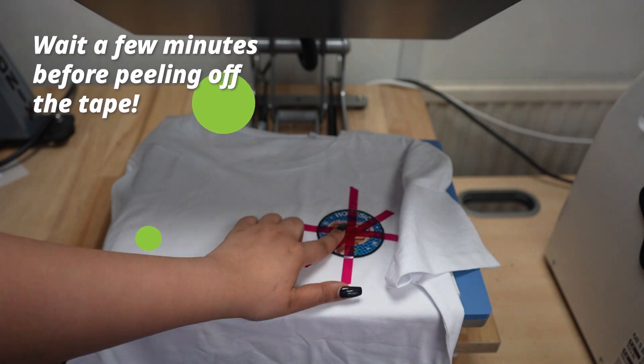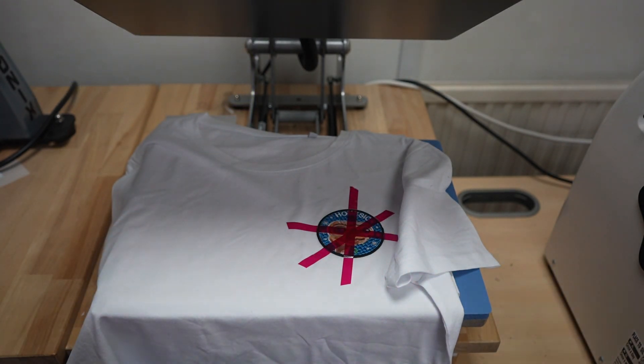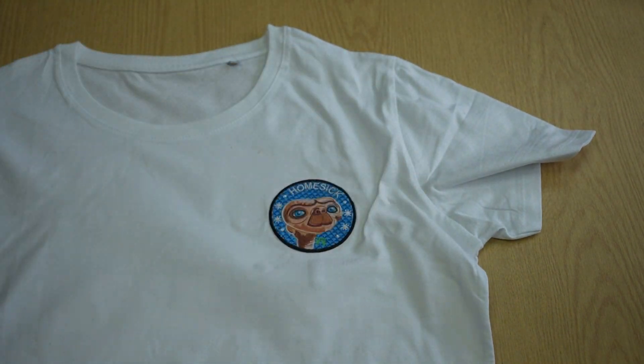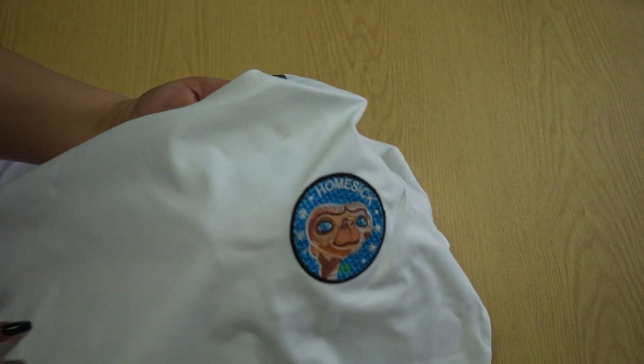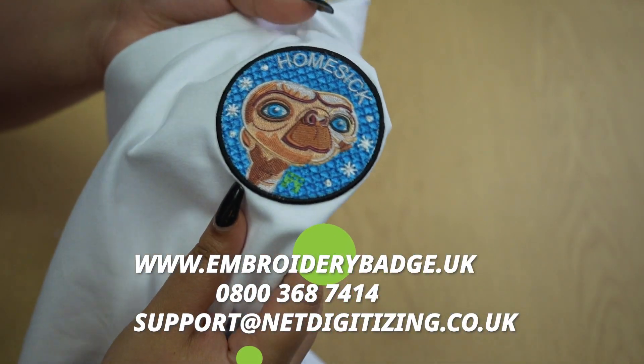Please wait until the garment has cooled down completely before taking off the transfer tape. And that's it! We have heat seal and placement instructions for different garments on our website embroiderybadge.uk. Thanks for watching!